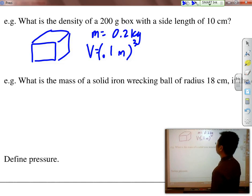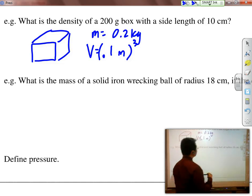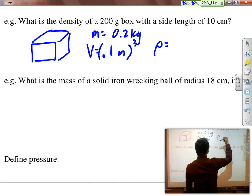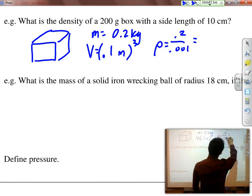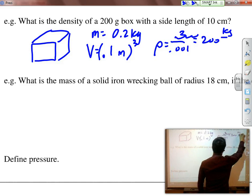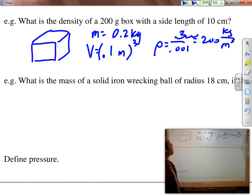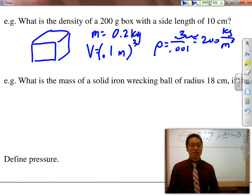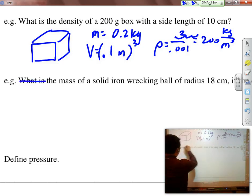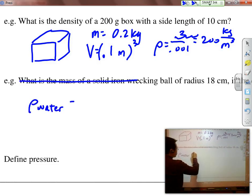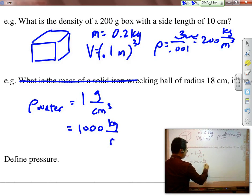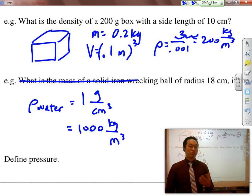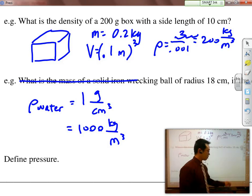So it would be 0.1 meters cubed. 0.2 kg would be the mass, the volume is 0.001 meters cubed, and your density would ultimately equal 200 kg per meter cubed. The only density that you need to memorize is the density of water. In chemistry, you learn it to be 1 gram per centimeter cubed. For physics, however, we don't use grams or centimeters, so it's going to be 1,000 kg per meter cubed, which means that this box will float on top of the water.